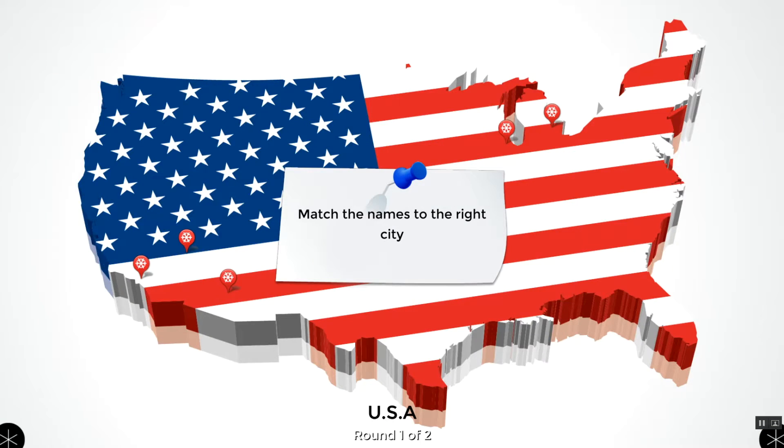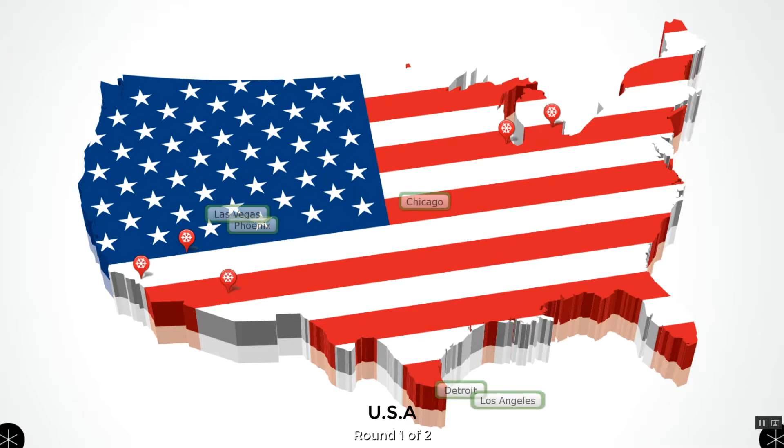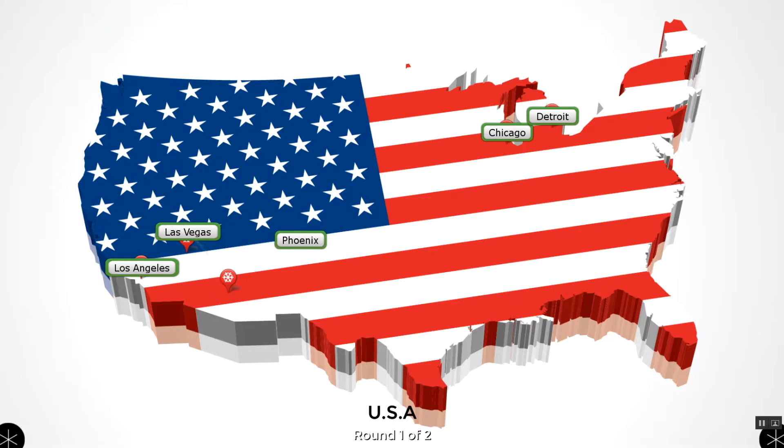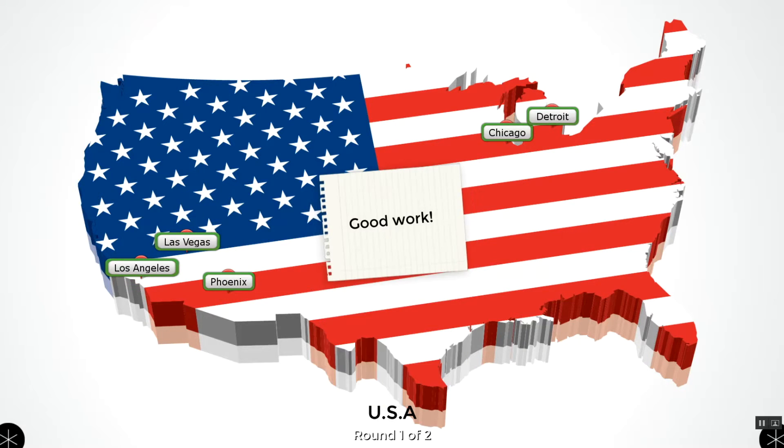The goal is to drag the names of cities to the correct tags. After all items are placed, incorrect ones will give off a flashing red glow, allowing for self-correction. Positive feedback is provided after each round.